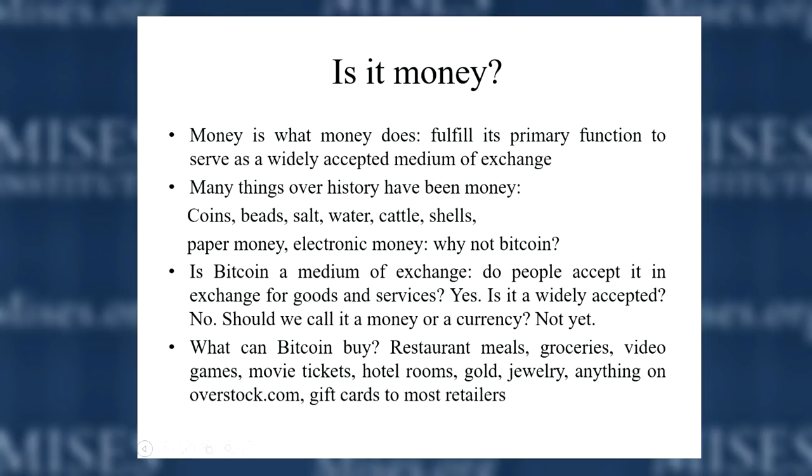If you look back at history, so many different commodities have been money over thousands of years — cattle, shells, coins, silver, gold. In prisons, cigarettes and laundry detergent emerged spontaneously to become media of exchange. So is it surprising that something like Bitcoin is also being used as a medium of exchange? No, it's not. Electronic money, paper money — these things have been used as a medium of exchange. There's no inherent reason why Bitcoin cannot be used as one.